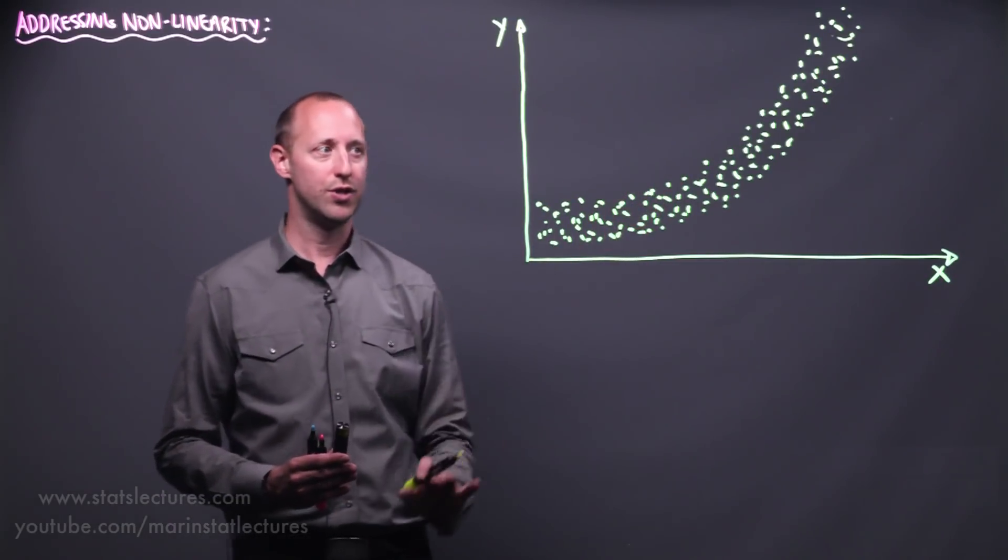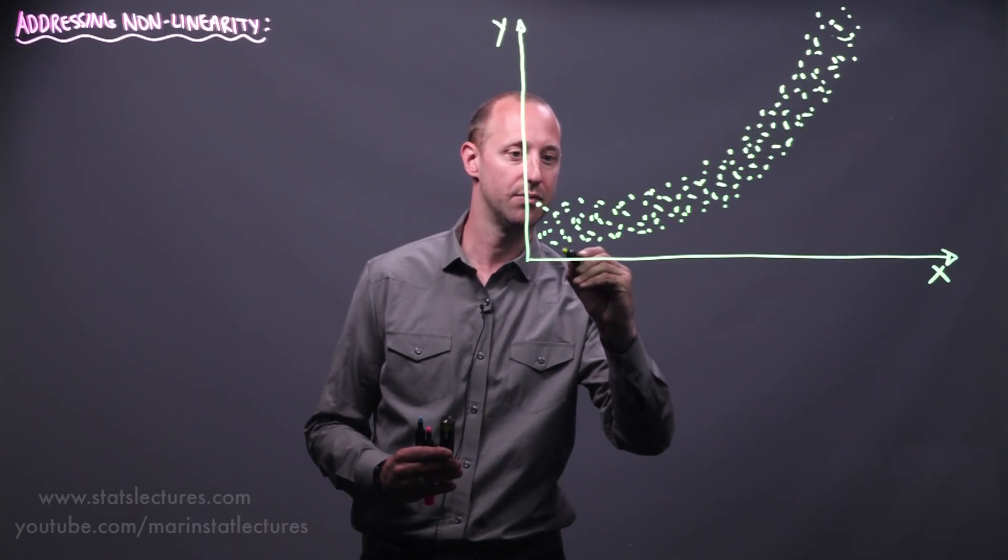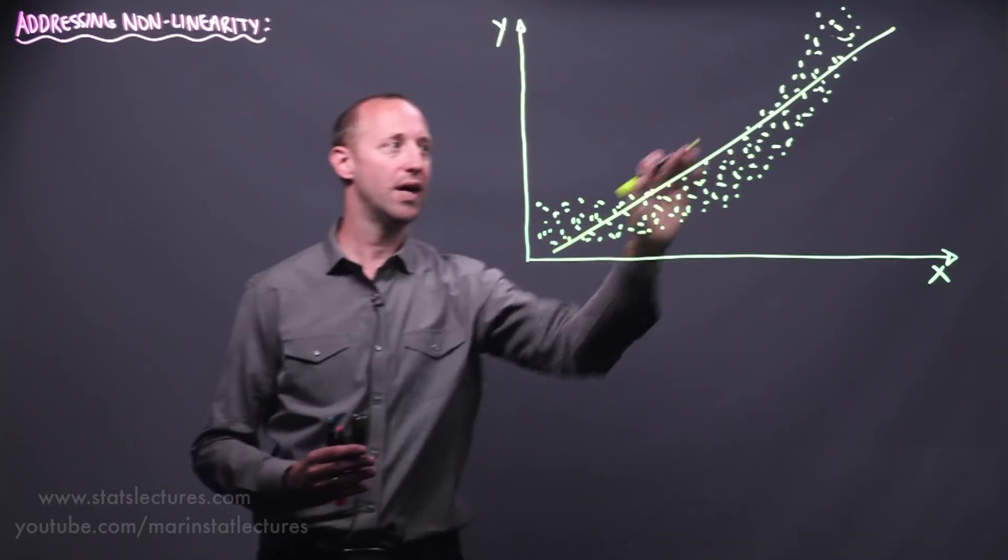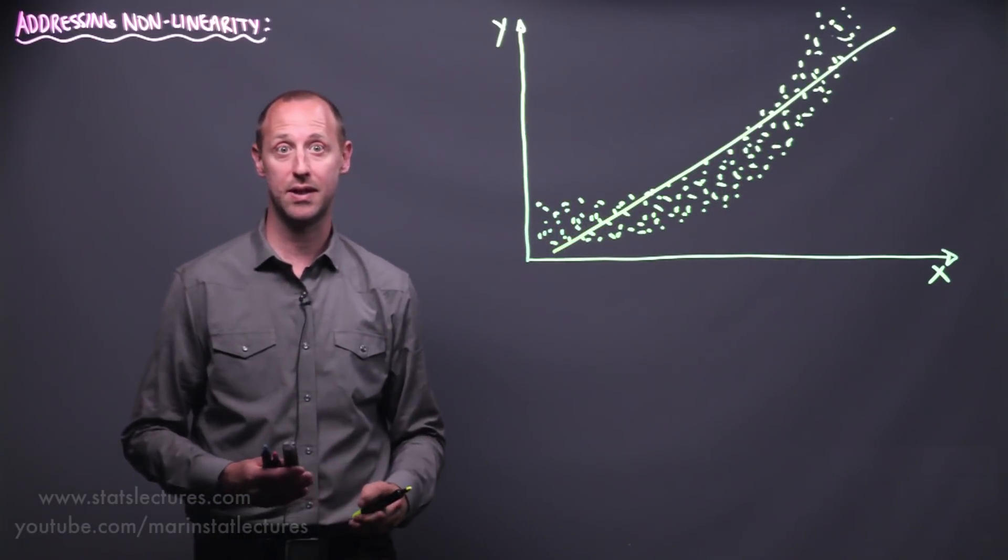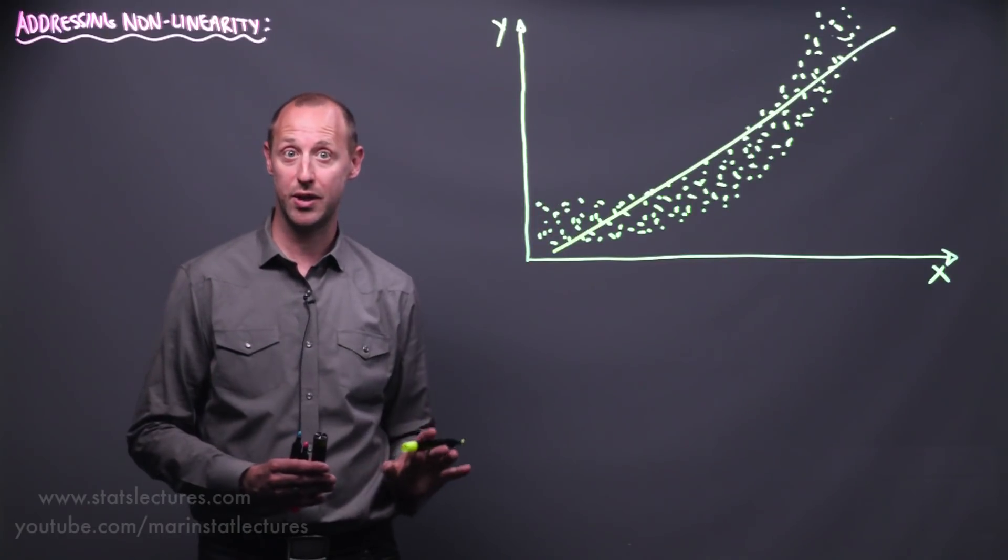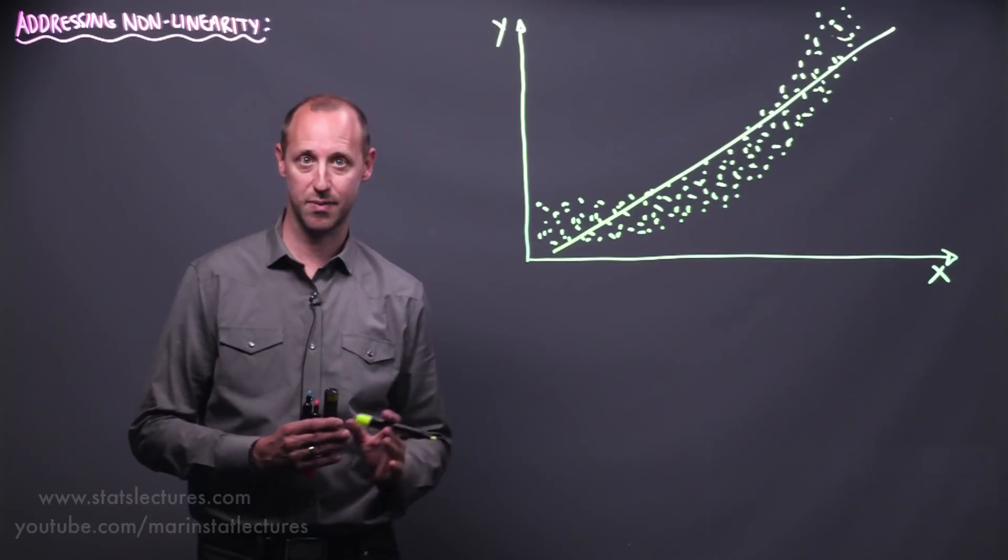In linear regression we're generally going to try and fit a line to describe the relationship between x and y. So if we were to do that we might end up with a line something like this. Now one thing you notice is that this line isn't going to be a good fit regardless of if we're looking at a predictive model or an effect size model.